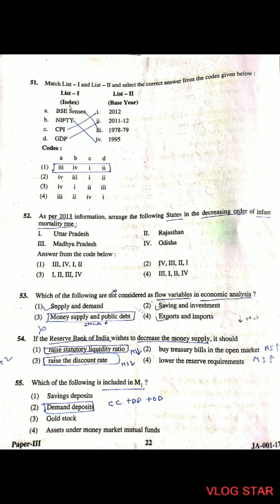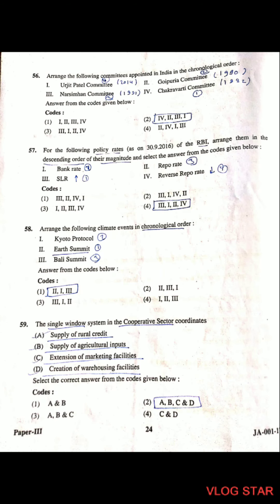Question 55: Which among the following is included in M1? The formula of M1 is CC + DD + OD — currency in circulation plus demand deposits plus other deposits. DD stands for demand deposits, so the second option is correct.